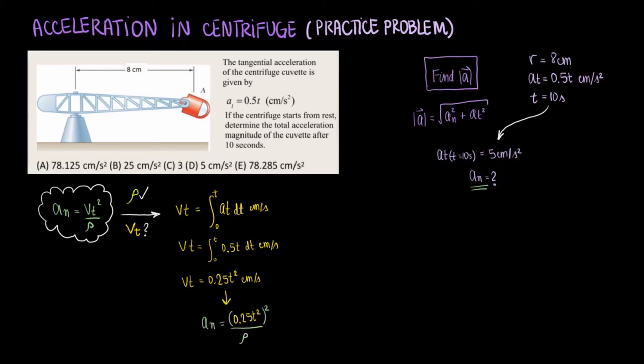The numbers simplify out and we end up with the normal acceleration equal to 78.125 centimeters per second squared.